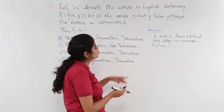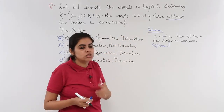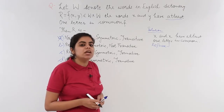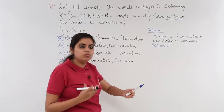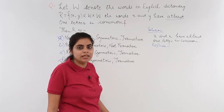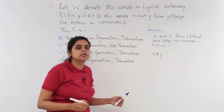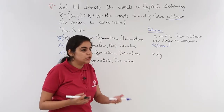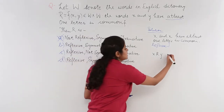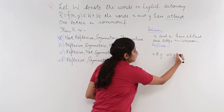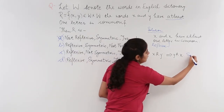For symmetric, if (x, y) belongs to the relation, then (y, x) must also belong to the relation. That means if x and y have at least one letter in common, do y and x also have at least one letter in common? Yes, definitely. If you interchange the positions, they would still have one letter in common. Since x related to y implies y related to x, it is also a symmetric relation.